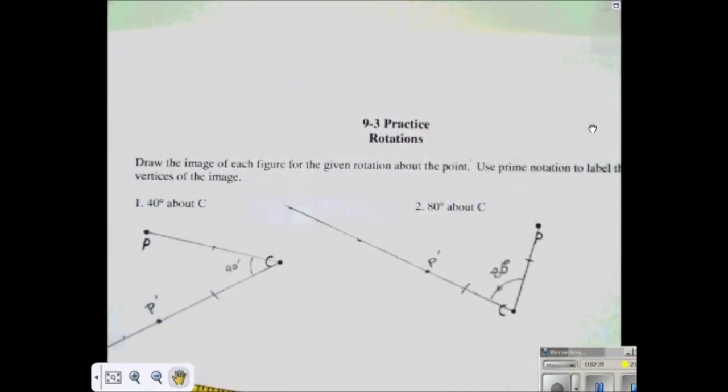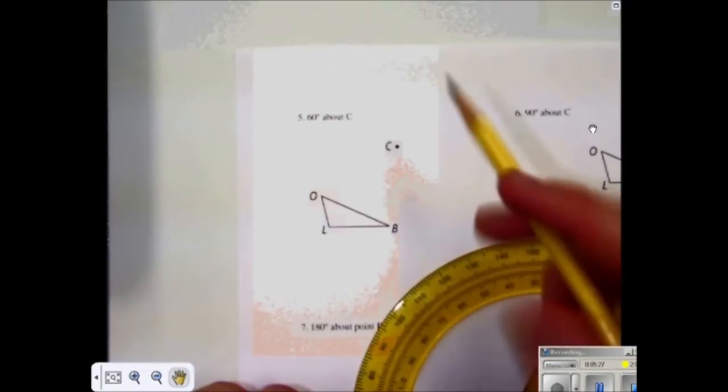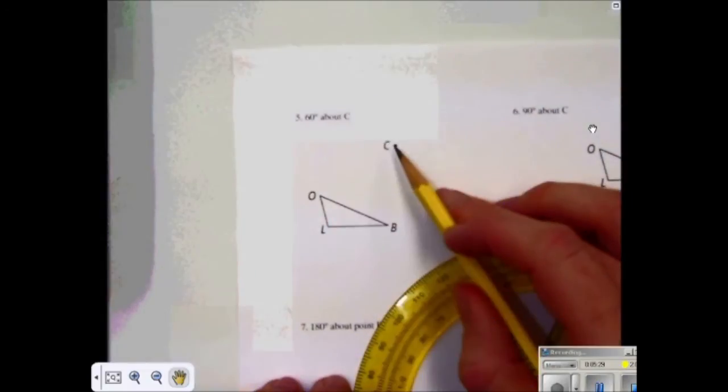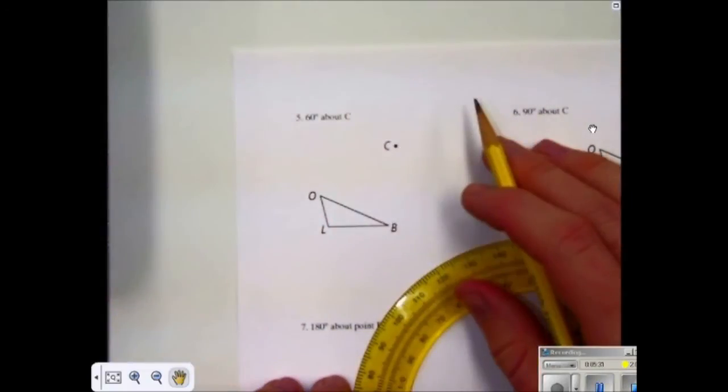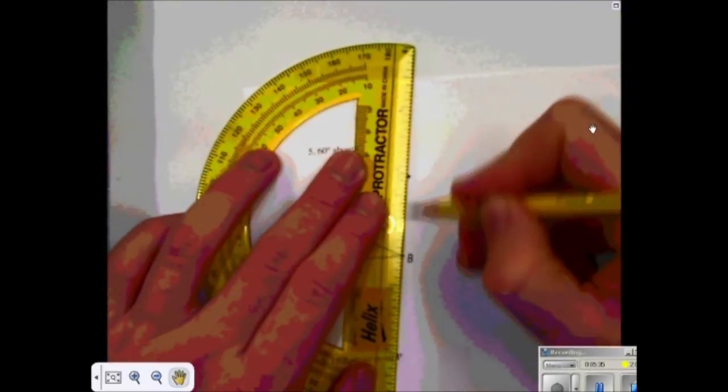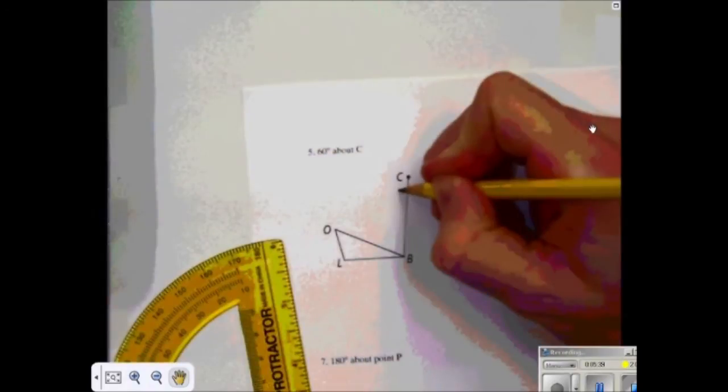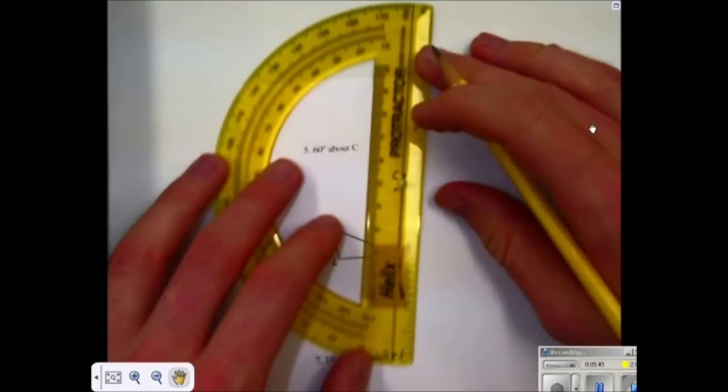Now, when you do a geometric figure, like a line or a triangle, you're just doing the same thing, but with several different points. We will do this triangle, about point C, 60 degrees. So I'll take each point, draw in CB. Again, the angle is counterclockwise, so I'm going to go this way. And I go measure 60 degrees.